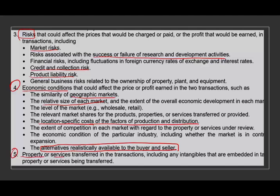The fifth factor is the nature of the property or service transferred in the transaction — for instance, whether there is an intangible embedded in a tangible property or service being transferred. These are the five major factors. In the real world, each transaction is unique, so determining the price is tricky. Critically, companies must document how they determined their transfer price. Documentation is the most important thing in transfer pricing.